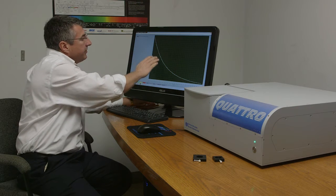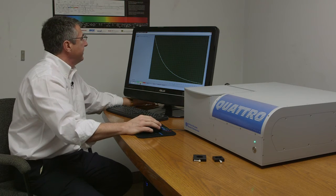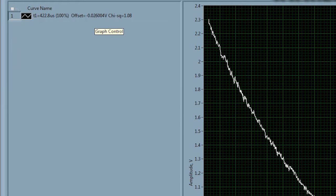In only one second we got a very good looking decay that here is measured and immediately as it collects data it also reports at the very top a measured fluorescence lifetime. In this case 422 microseconds with a chi-squared which is a goodness of fit measurement of just a little over one. So it's a very good fit.